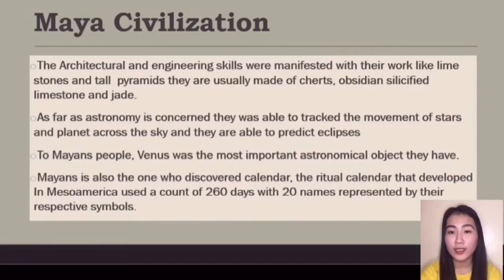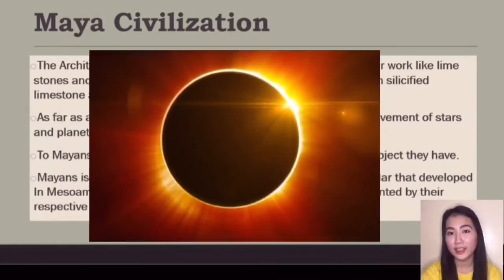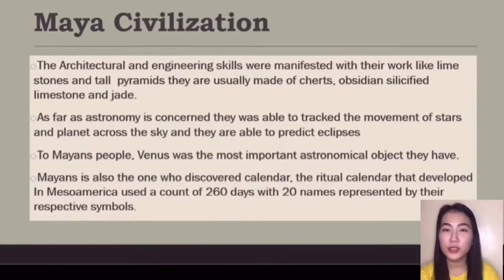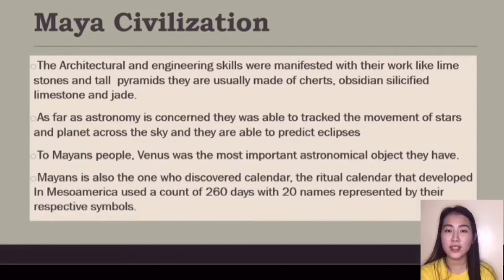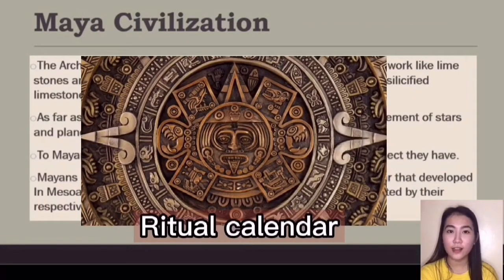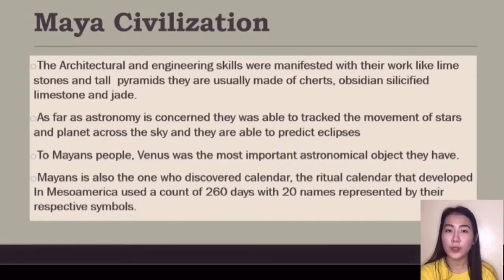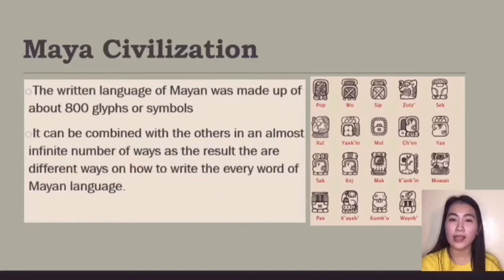The Maya used materials such as obsidian, silica, limestone, and jade. As far as astronomy is concerned, they were able to track the movement of stars and planets across the sky and predict eclipses. To the Mayan people, Venus was the most important astronomical object. The Maya also developed the ritual calendar used in Mesoamerica, which has an account of 260 days with 20 names represented by their respective symbols.